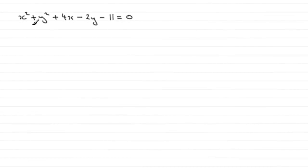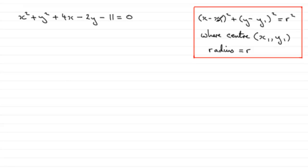For this part of the question we're given the equation of a circle C, and we've got to find the coordinates of the center and the radius of the circle. This is a fairly standard type of question. If you've got an equation of this format, it represents a circle with center at (x1, y1) and radius r.